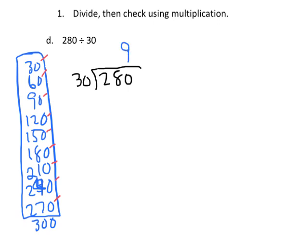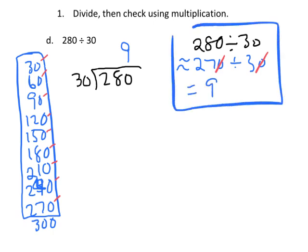Now that's not how Engage New York does it. Engage New York does it an equally fine way which is to say well, 280 divided by 30 and do some rounding. We can say well 280 is about 270 divided by 30. We don't need to round, and then in that case cross off the zeros. 27 divided by 3 is 9. So that's another way for us to figure out our quotient.